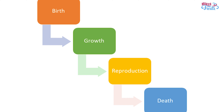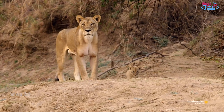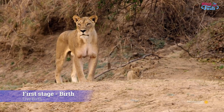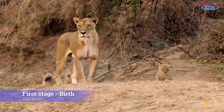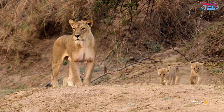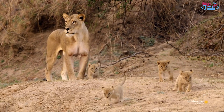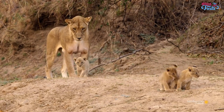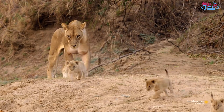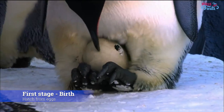Life begins when an animal is born or hatched from an egg. For example, mammals like humans, dogs, and lions give birth to live young, while birds and reptiles lay eggs that hatch into babies.